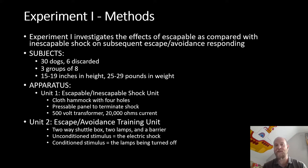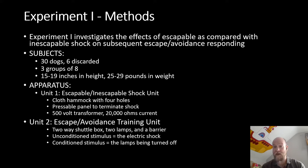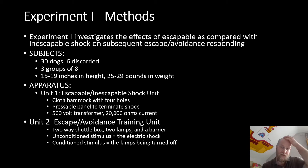Experiment One investigates the effects of escapable as compared with inescapable shock on subsequent escape-avoidance responding. The escapable versus inescapable distinction is the independent variable — that is the thing being manipulated in the training phase. The question is whether the animal learns that it can or cannot escape shock, and whether that subsequently affects responding in an escape-avoidance situation. The dependent variable is how the dogs behave when confronted with that avoidance situation.